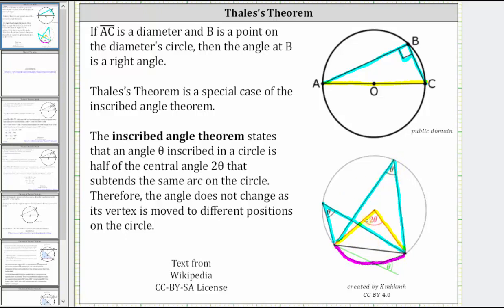So for Thales' Theorem, the central angle in this diagram is the angle AOC, which is a straight angle — an angle that measures 180 degrees — and therefore angle B is half of 180 degrees, or 90 degrees.